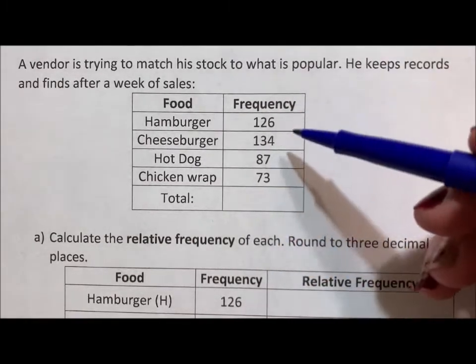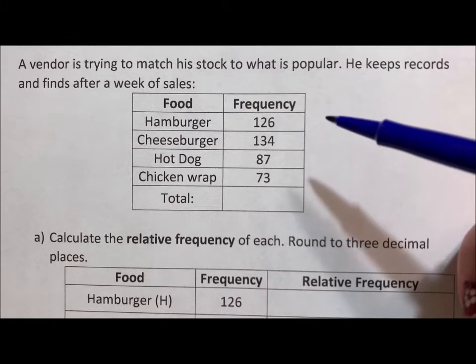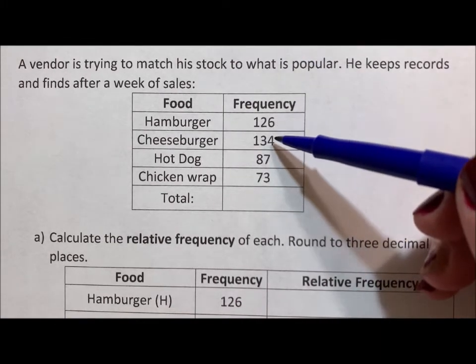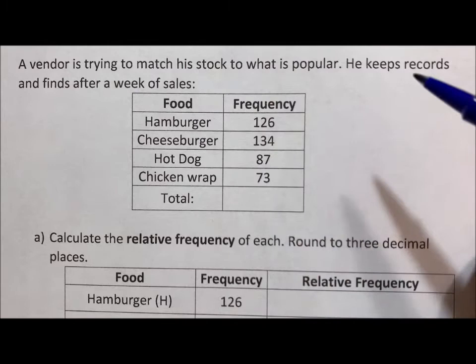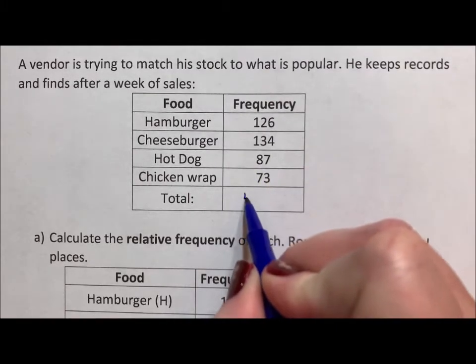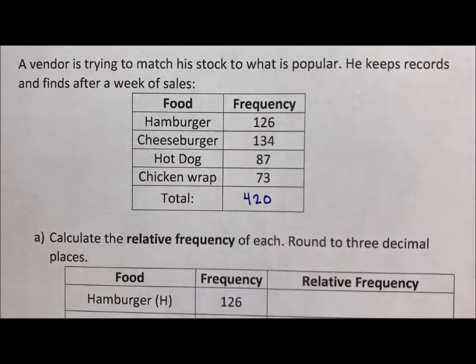So the first thing we're going to do is find out how many items in total he sold. We're going to add the 126, the 134, the 87, and the 73 and find out he sold a total of 420 items.